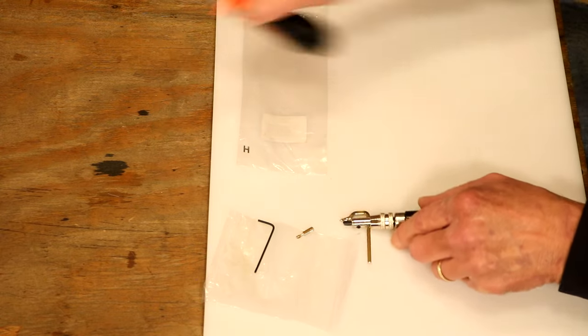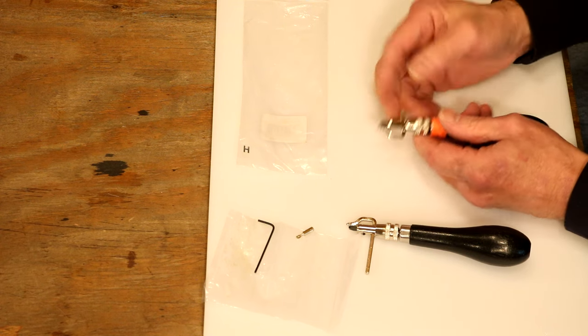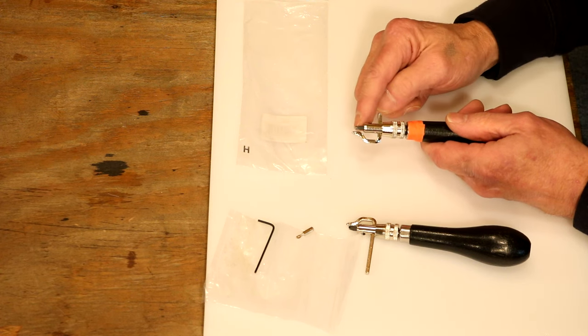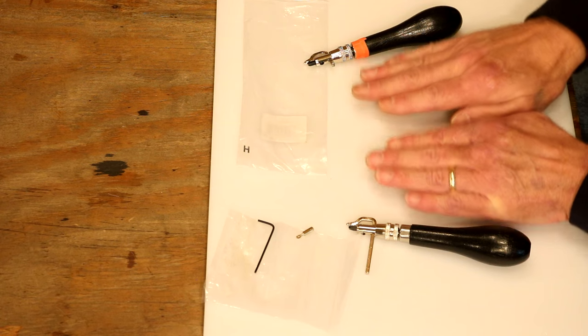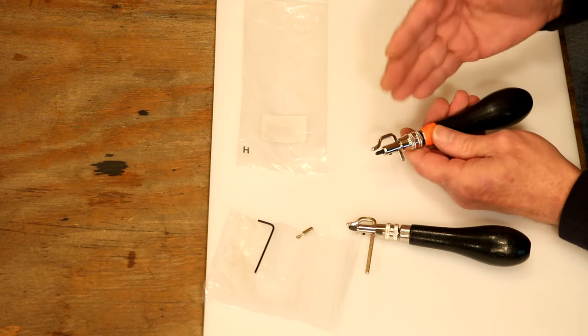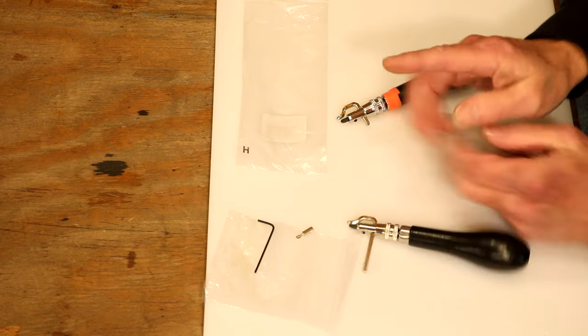I typically will set my groover at an eighth of an inch. I've got multiple groovers in my shop. On this one, I'm going to set this at an eighth of an inch, and I'm going to mark it, because if I'm going to chisel two pieces separately and then marry those together, if I use the groover, this same groover on both pieces, our edge is going to meet perfectly.